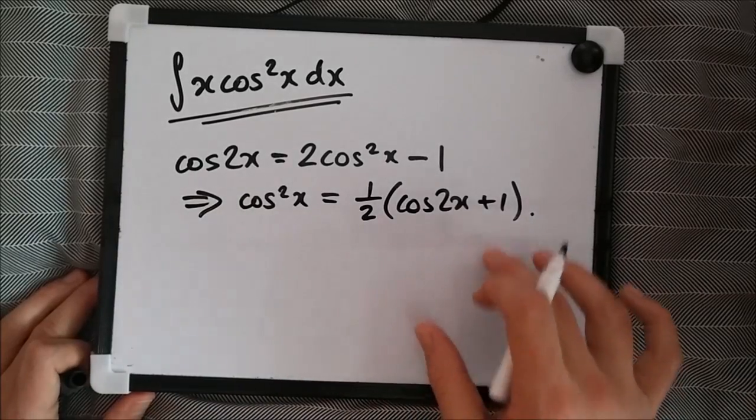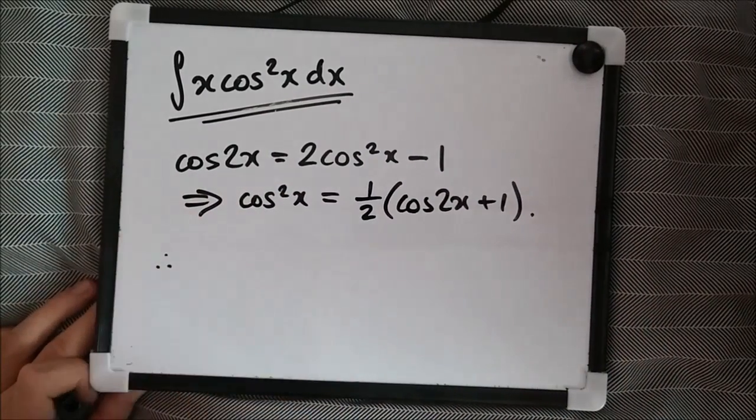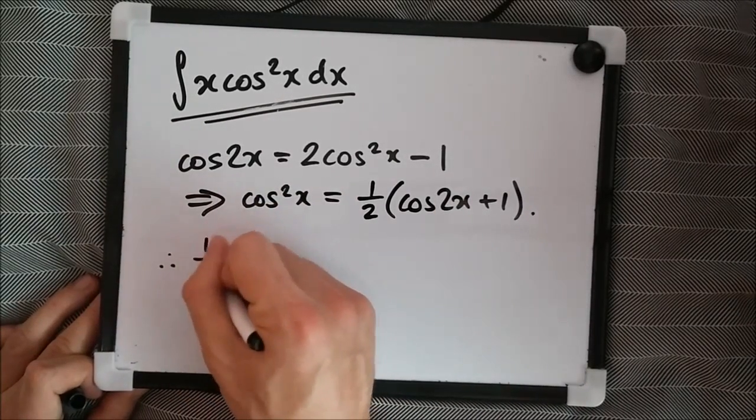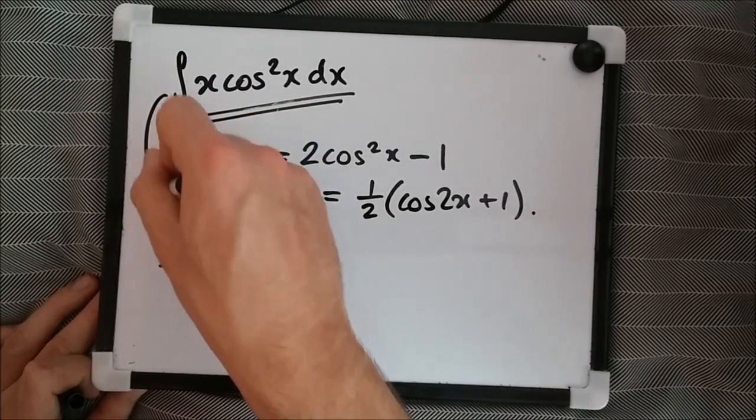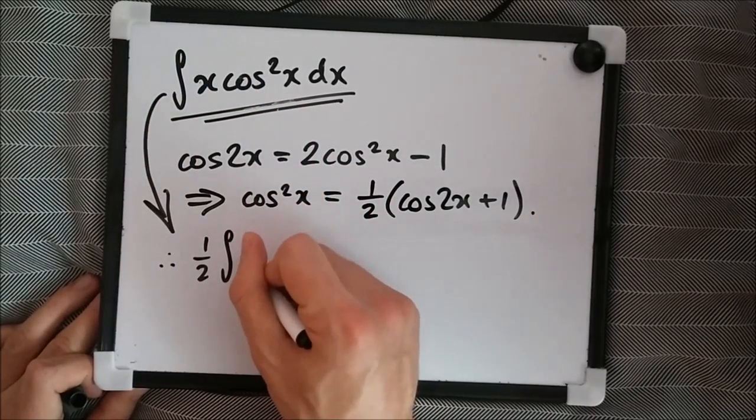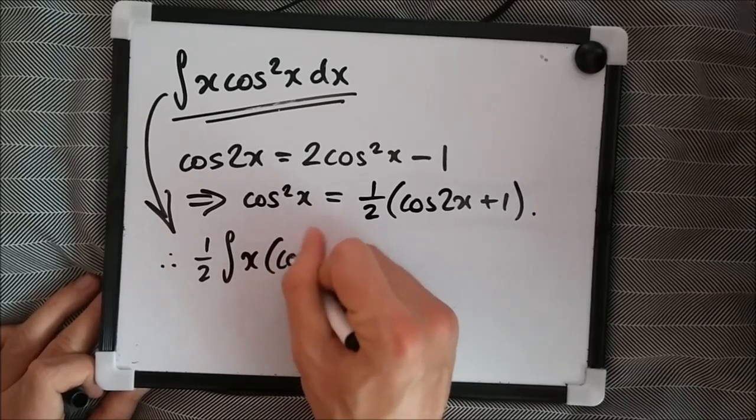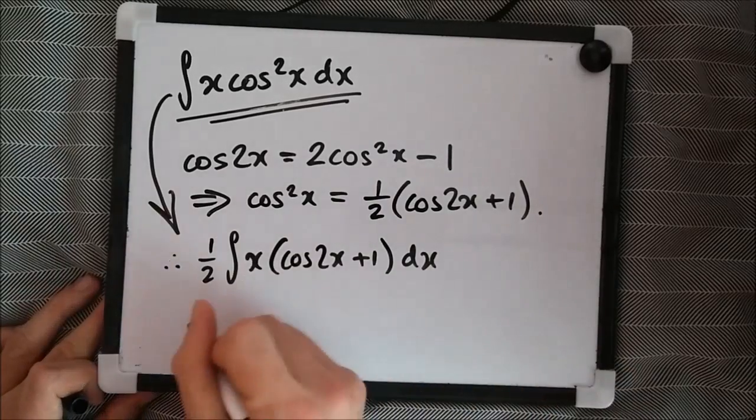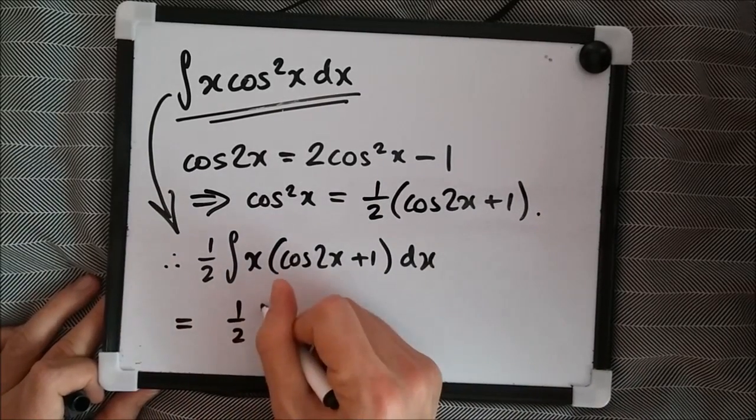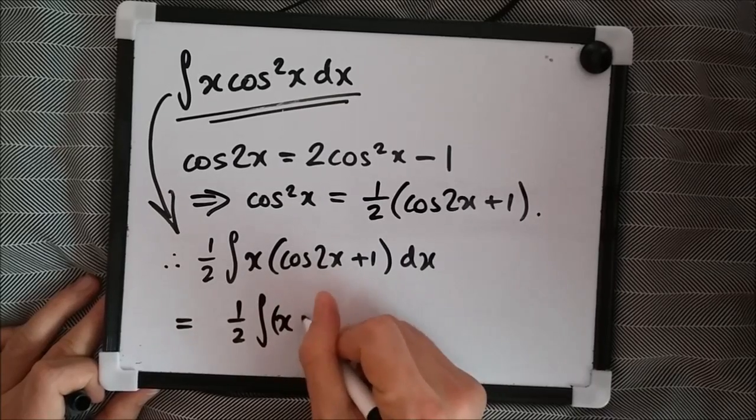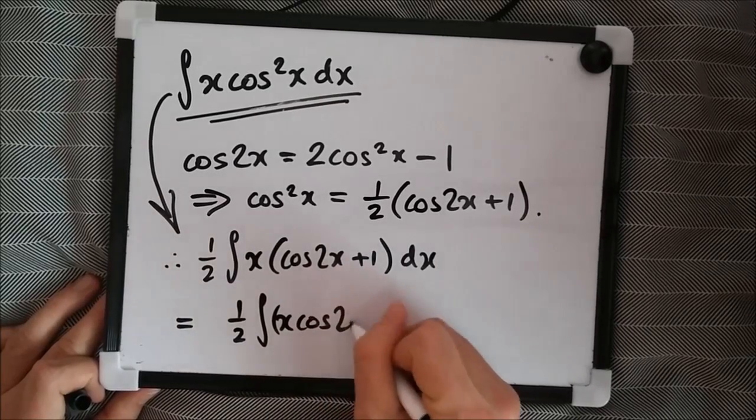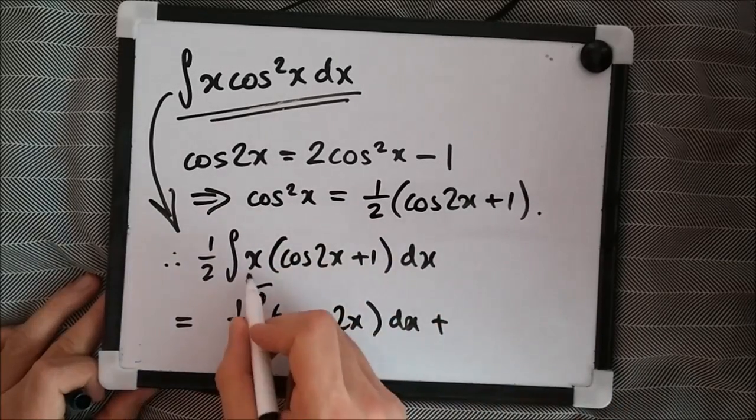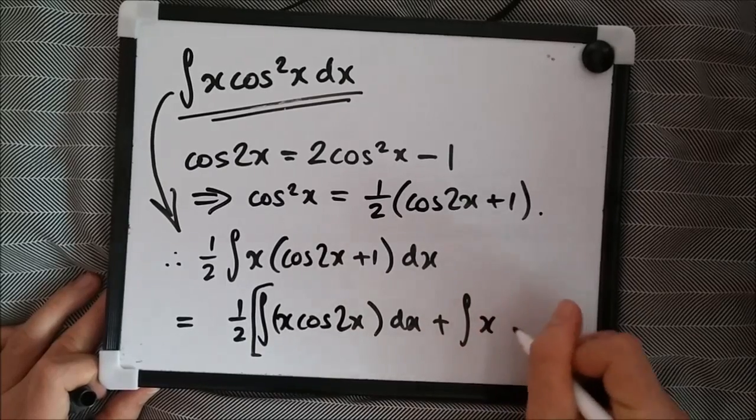This is the easiest one. And the reason why we choose this is because when you integrate this, it's very easily integrable. So suppose we rearrange this to make cos squared the subject, we should get cos squared x equals half cos 2x plus 1. So here we can substitute this directly, so therefore, I'm going to take half outside. In one step, we're going to have half x cos 2x plus 1 dx.